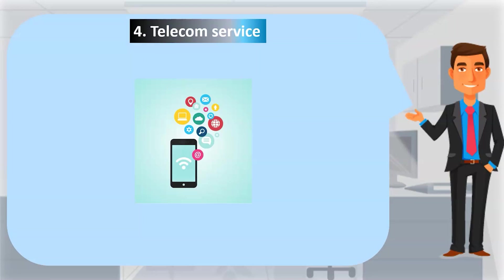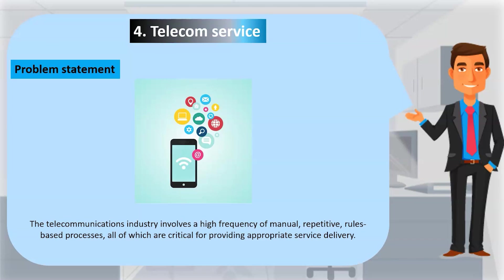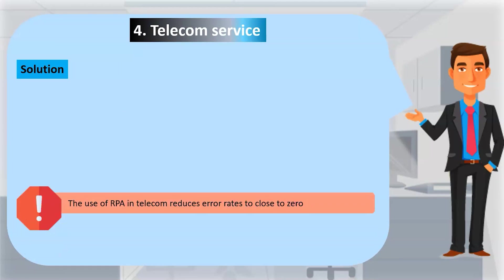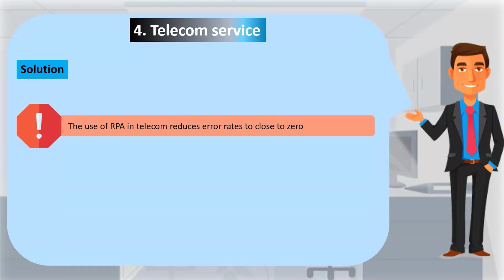The fourth example is Telecom Service. The telecommunications industry involves high-frequency manual, repetitive, rules-based processes, all of which are critical for providing appropriate service delivery. The foundation of telecommunications is made up of processes that are highly amenable to automation. For telecommunications companies looking to improve their customer surveys, high reliability and accuracy of process outcomes are required. The use of RPA in telecom reduces error rates to close to zero, improves data quality and customer service, and increases operational efficiency, all while contributing significantly to cost reduction.